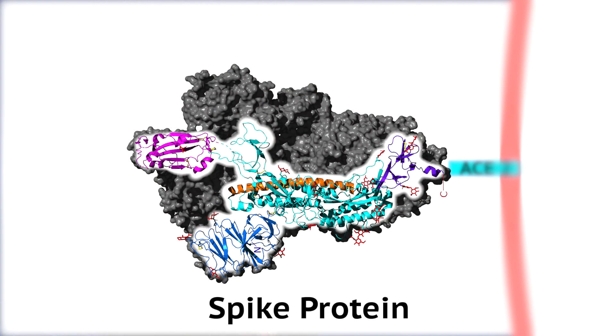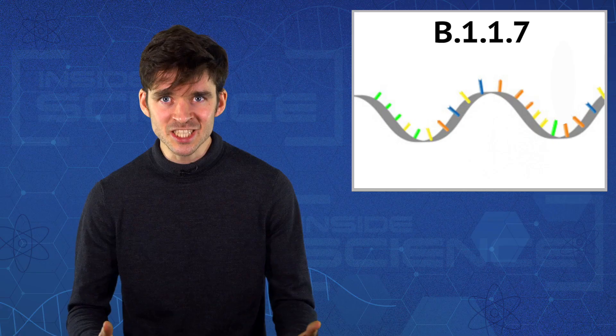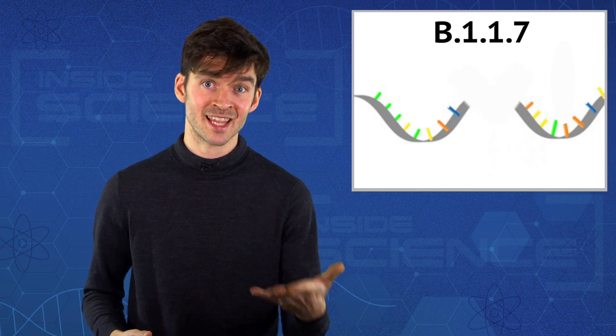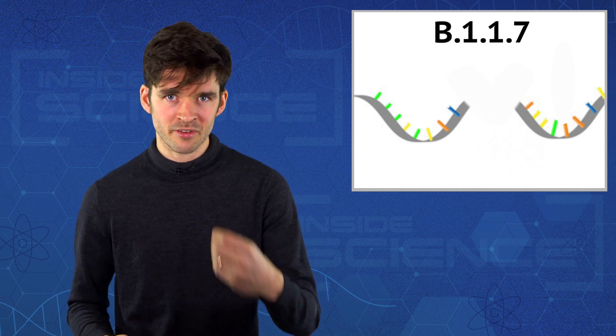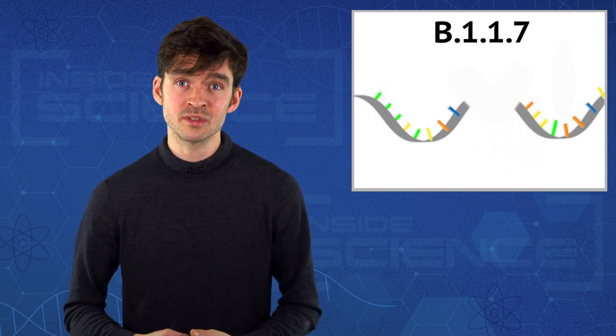A virus that sticks stronger could be more infectious. There has also been a short RNA deletion in B.1.1.7 in a sequence again coding for part of the spike. This deletion may help the virus to escape from antibodies of the immune system.